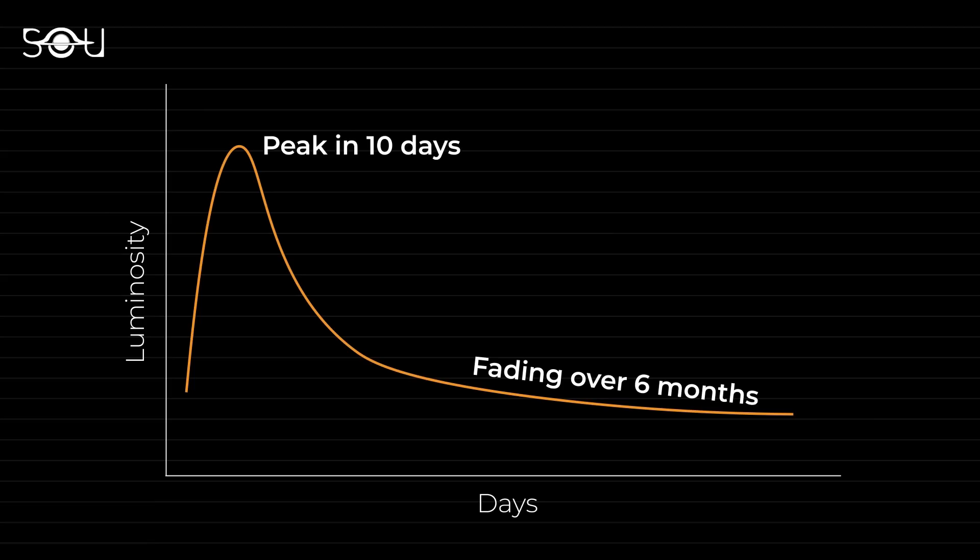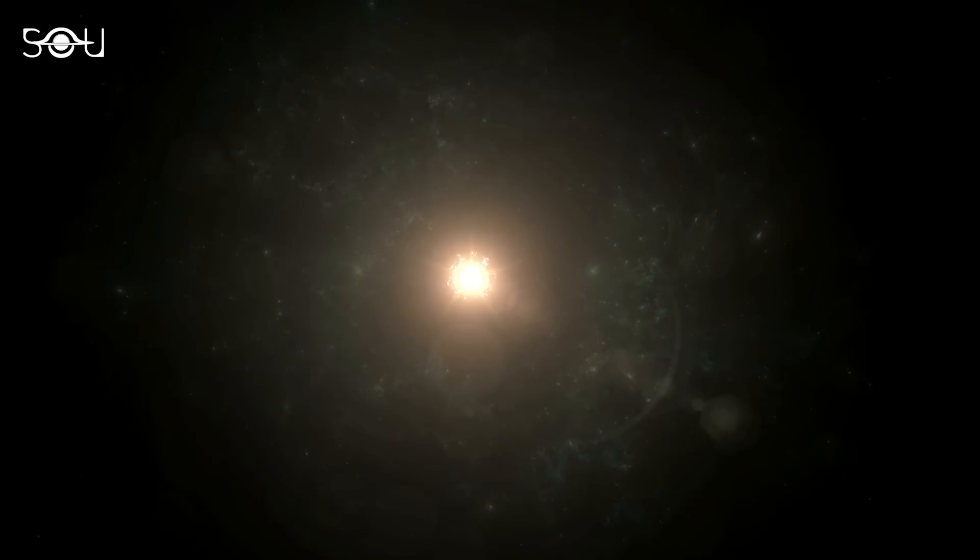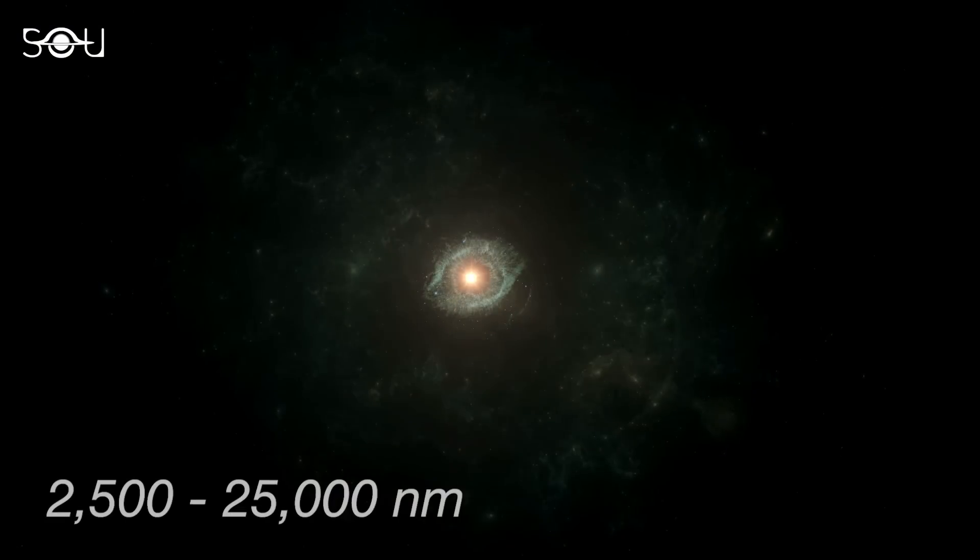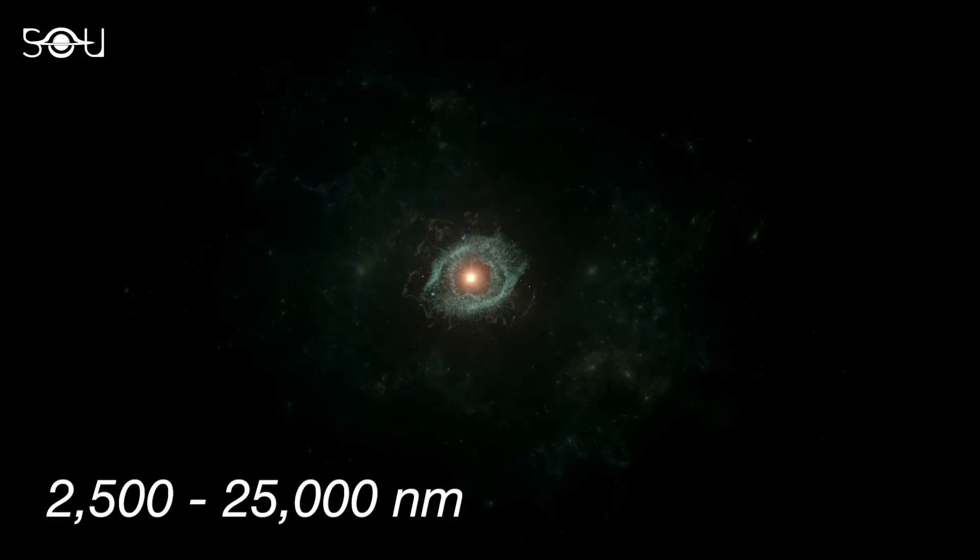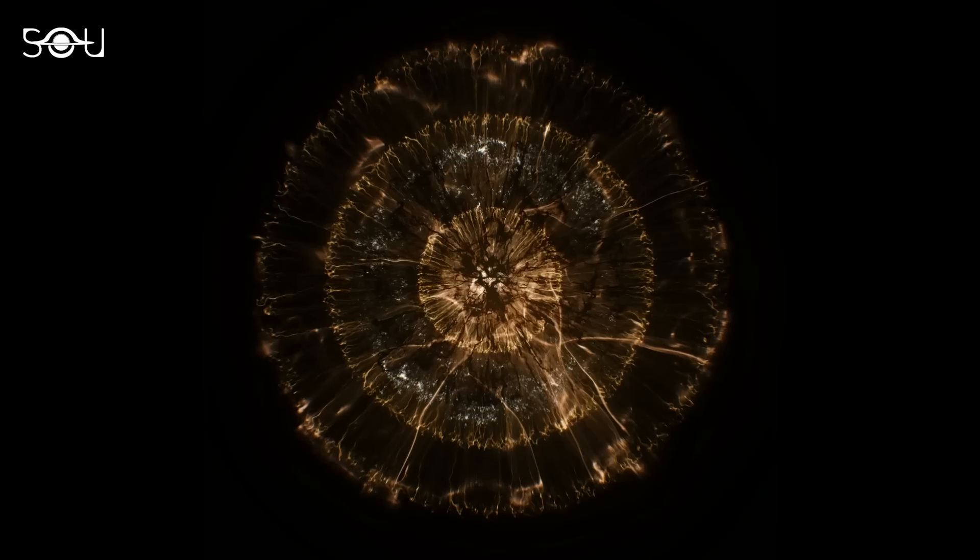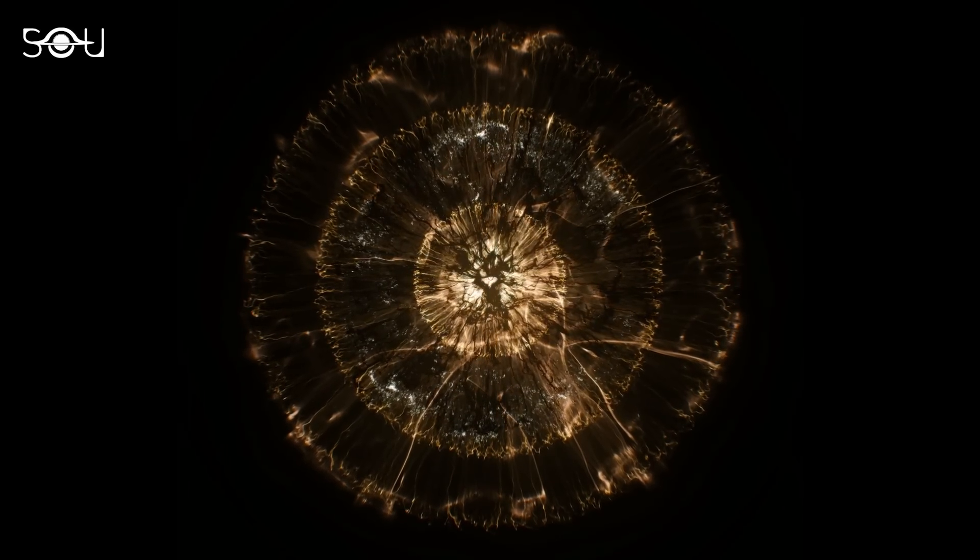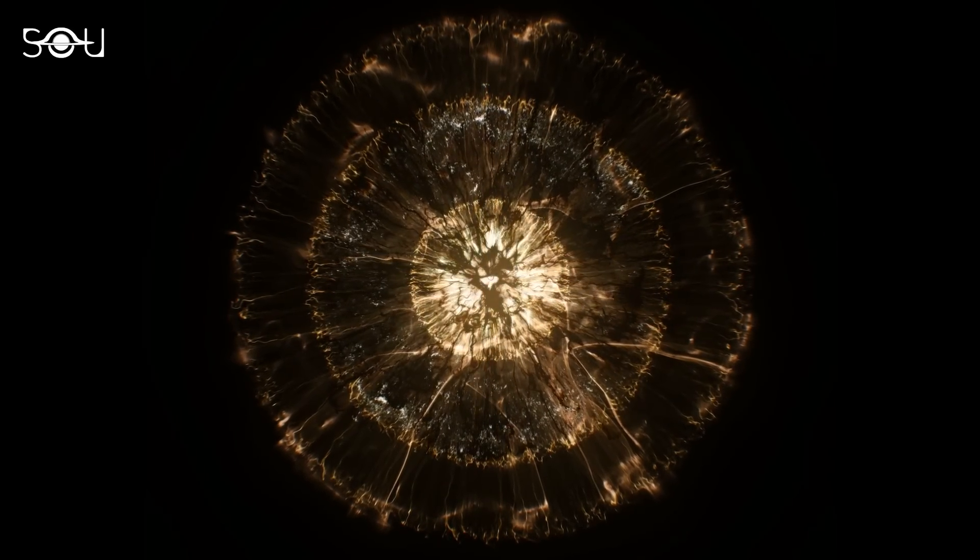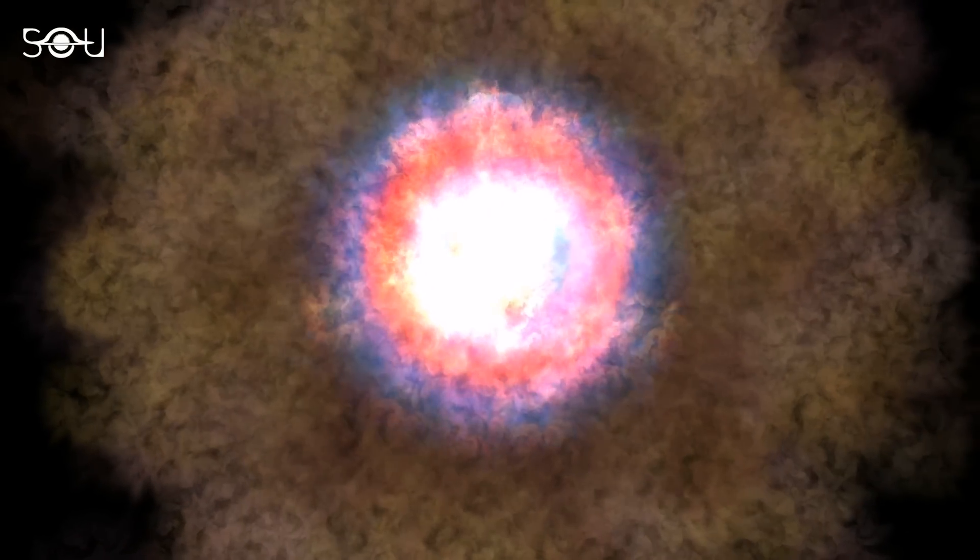This light source brightened very quickly, in just 10 days, and then slowly dimmed over about six months. Interestingly, they noticed it started to get brighter in the mid-infrared light about seven months before the big burst. Mid-infrared refers to the wavelength range of 2,500 to 25,000 nanometers. This mid-infrared light continued during the burst and lasted for at least 15 months. At one point, about four months after the big burst, the mid-infrared light was 50 times brighter than the visible light.